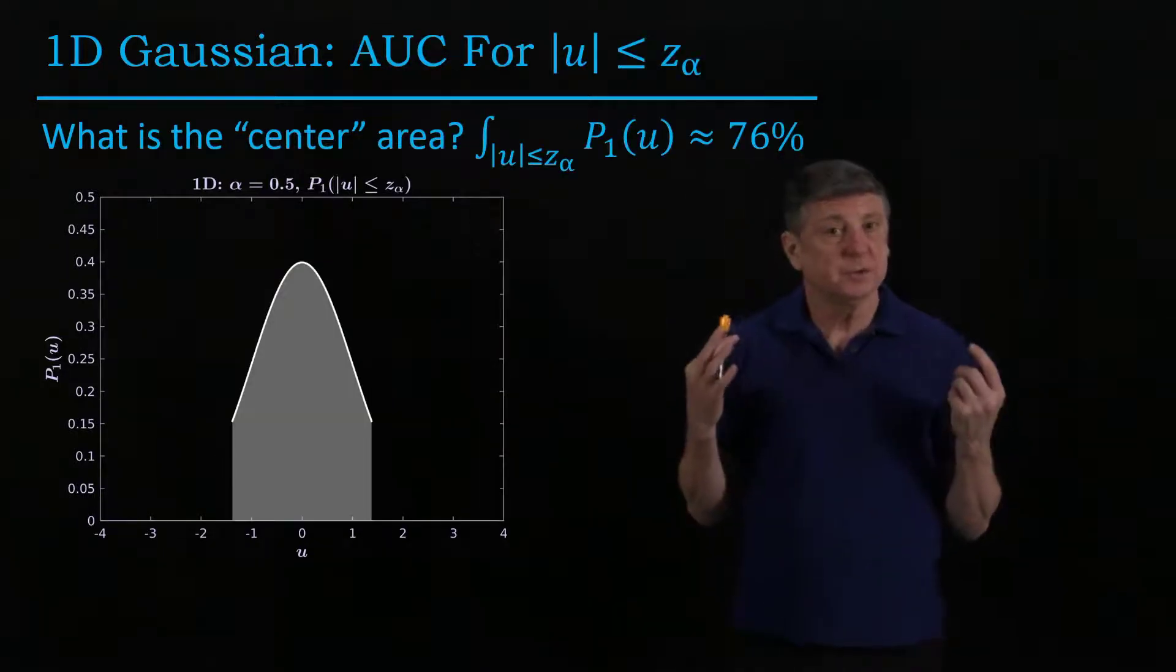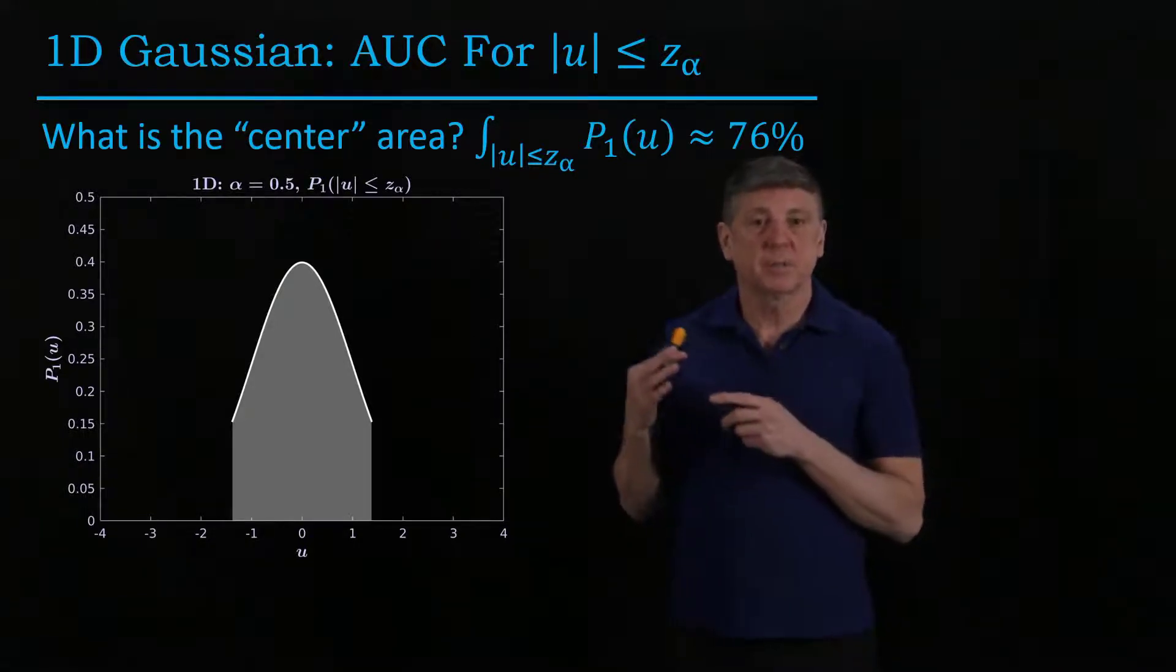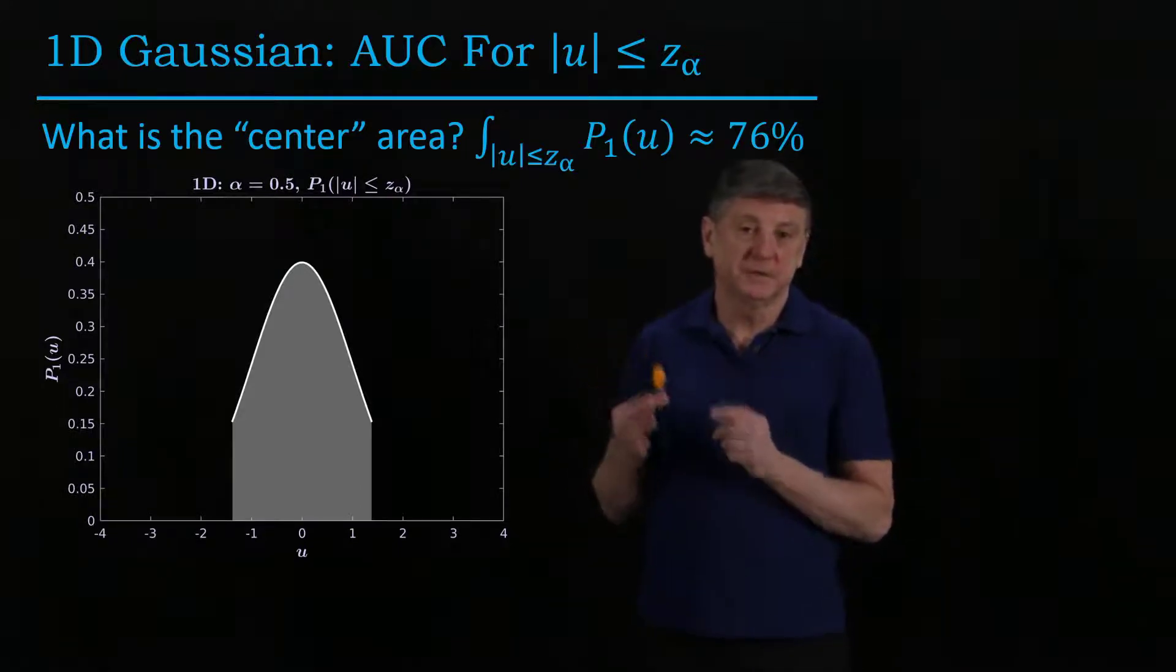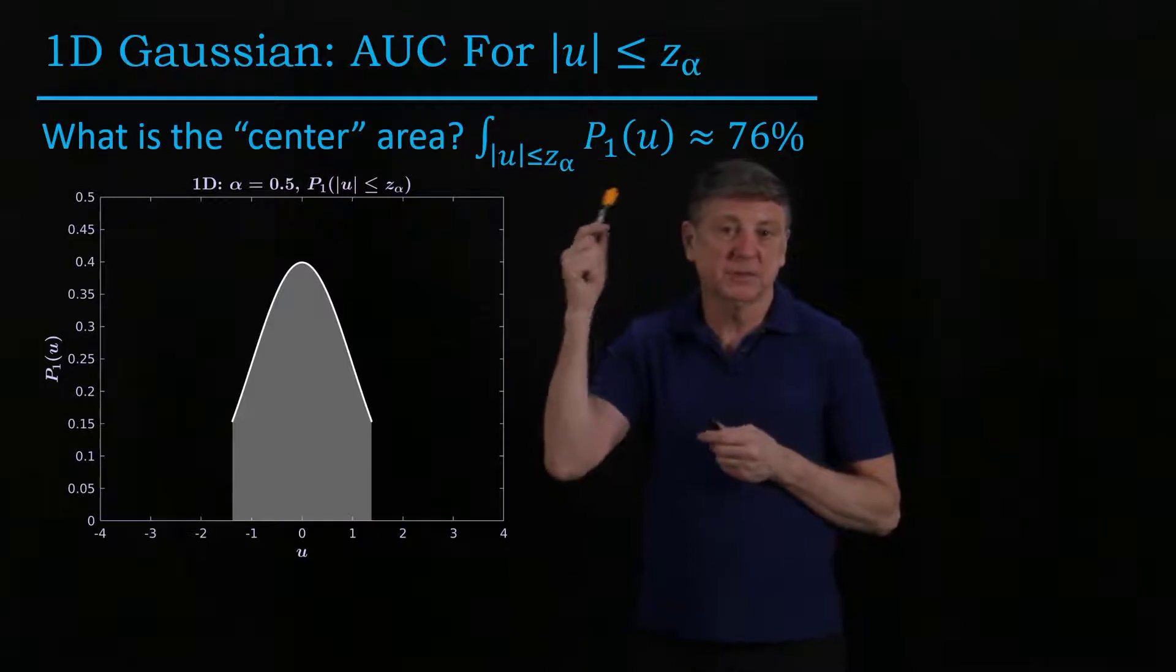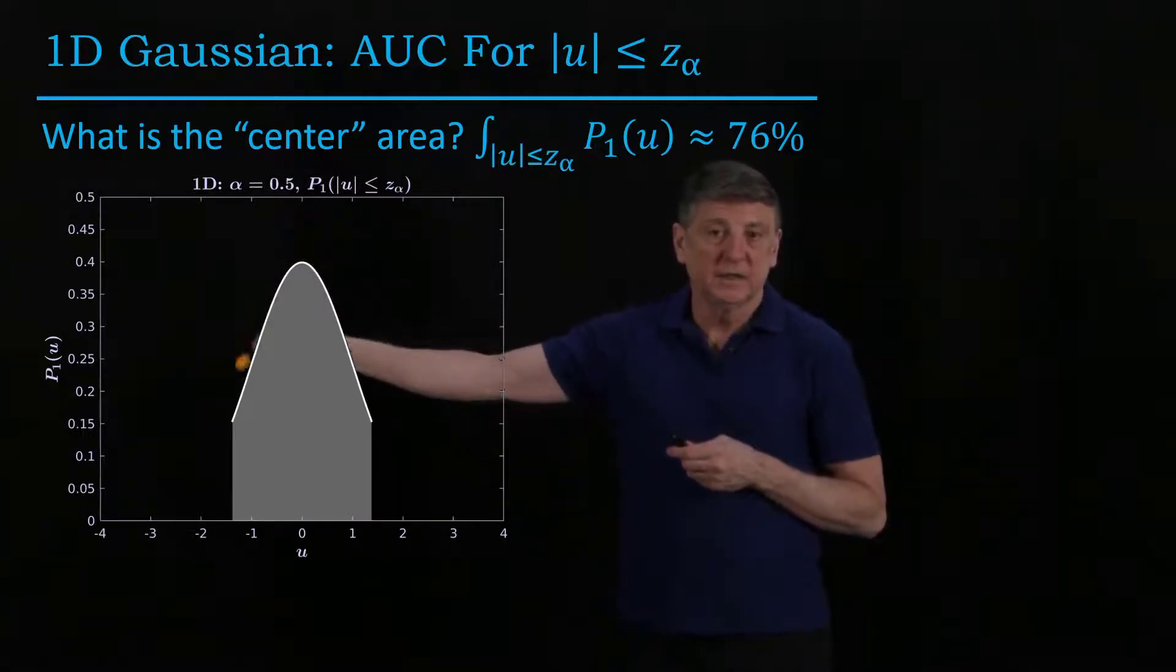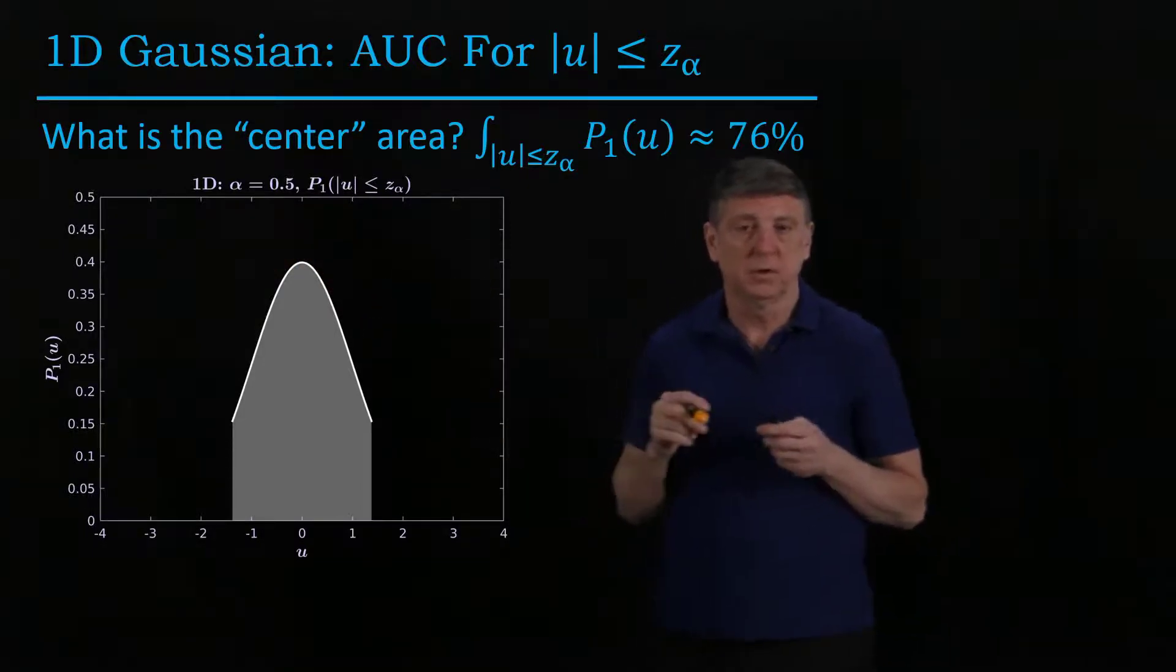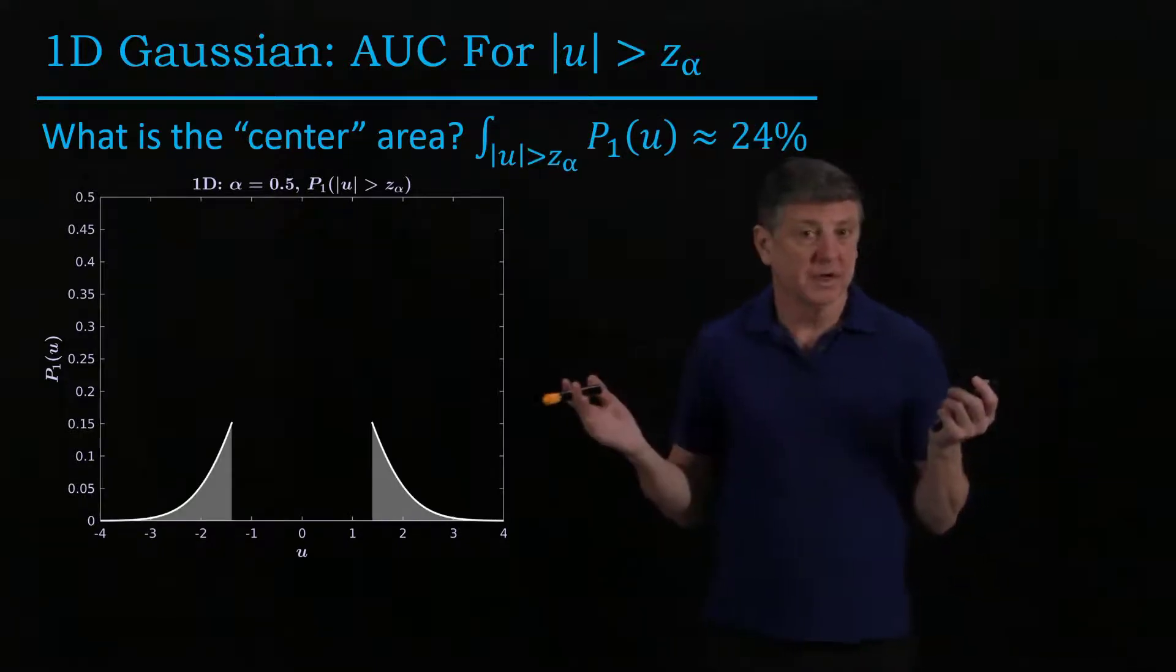And we can then compute the area by integrating this. So that would move us from a probability density function to a cumulative distribution. And when we do that, we get approximately 76% of the data are contained within this alpha equals one half zone. And that means that 24% are in the tails. And we can visualize that also.